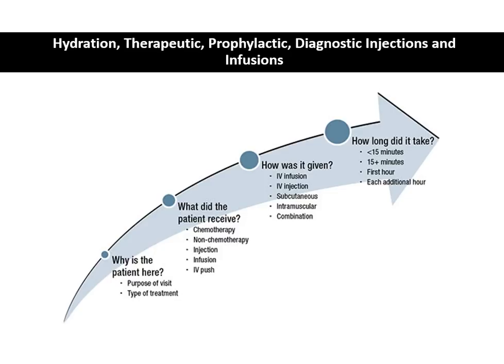An infusion is where intravenous fluids and/or drugs are administered over a period of time, for either a diagnostic or therapeutic purpose. An intravenous push is medication given for an immediate effect — usually three to five minutes — which is different from an infusion, which is usually 30 minutes or more. For these services you have to ask yourself: why is the patient here, what did the patient receive, how did they receive it, and how long did it take? All of this must be documented in the health record.